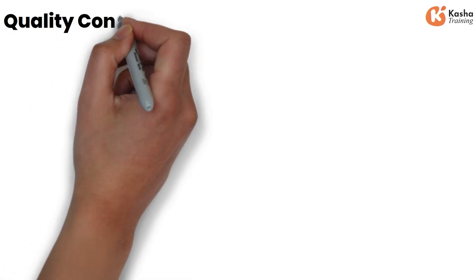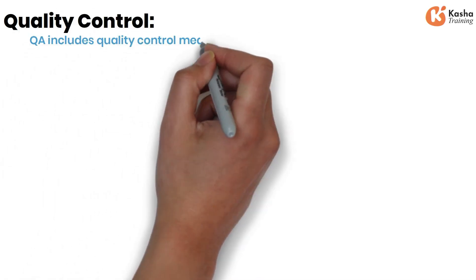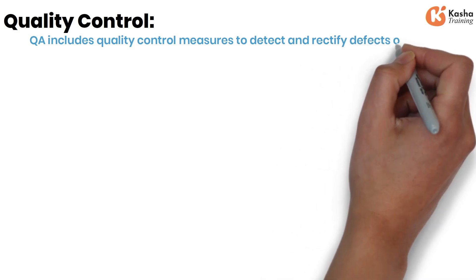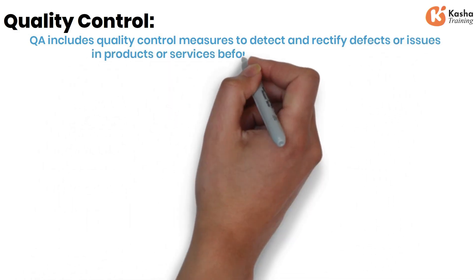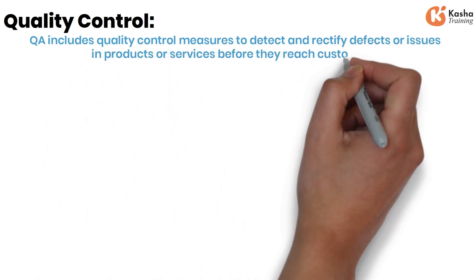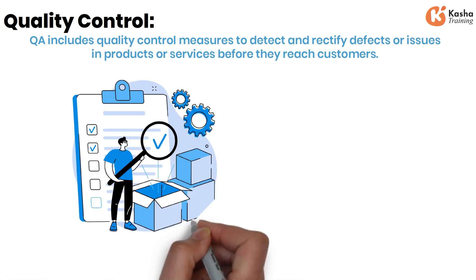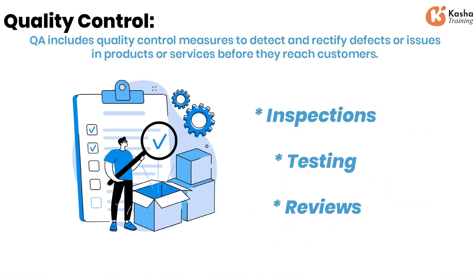Quality Control. QA includes quality control measures to detect and rectify defects or issues in products or services before they reach customers. This can involve inspections, testing, and reviews.